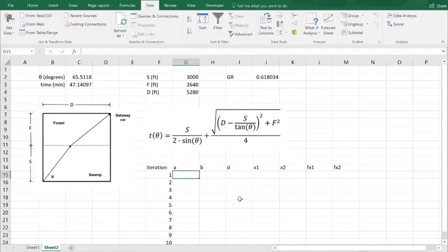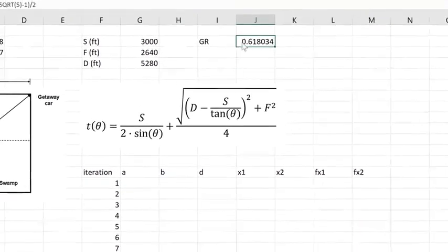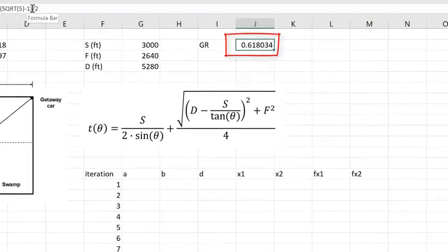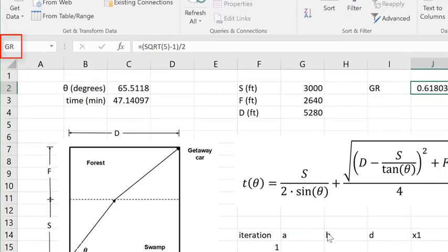So I've got this set up to put in our golden section search algorithm. I've got my golden ratio up here which is the square root of 5 minus 1 quantity divided by 2. I've named that GR up here in the name box.